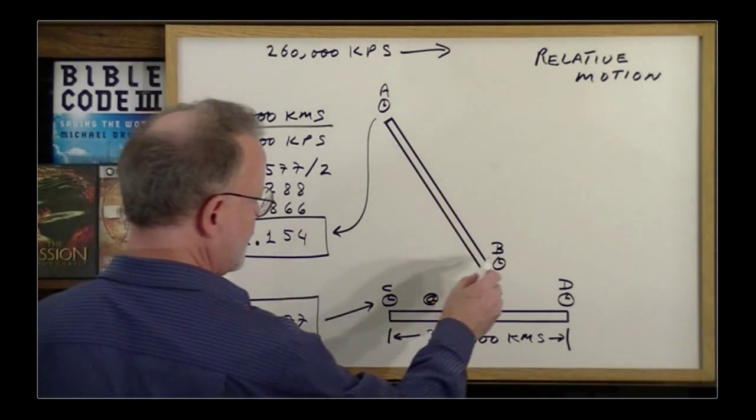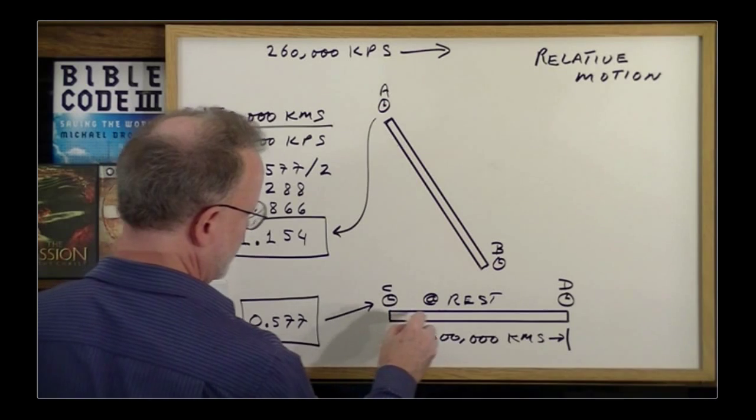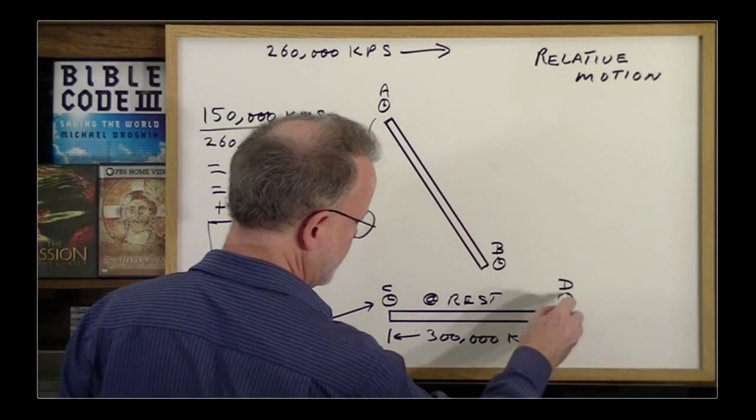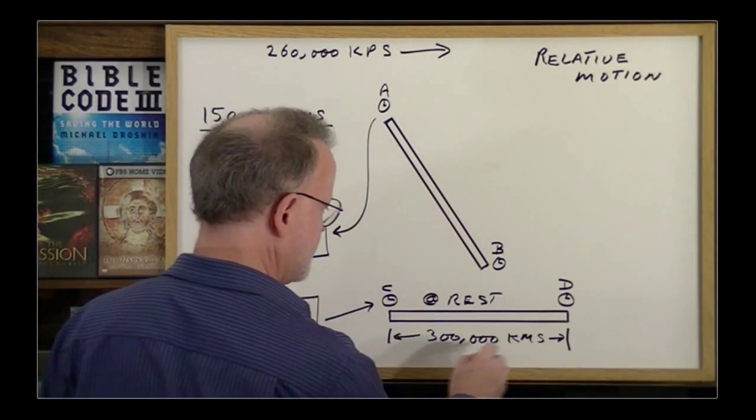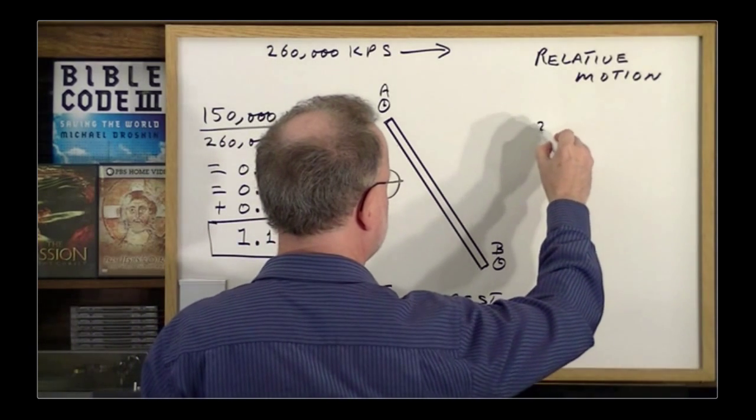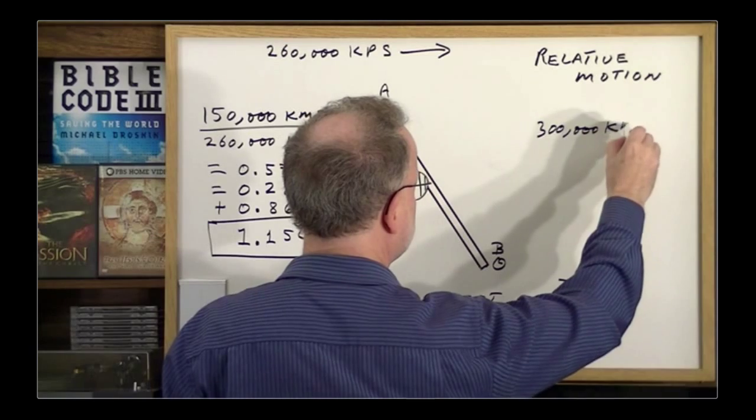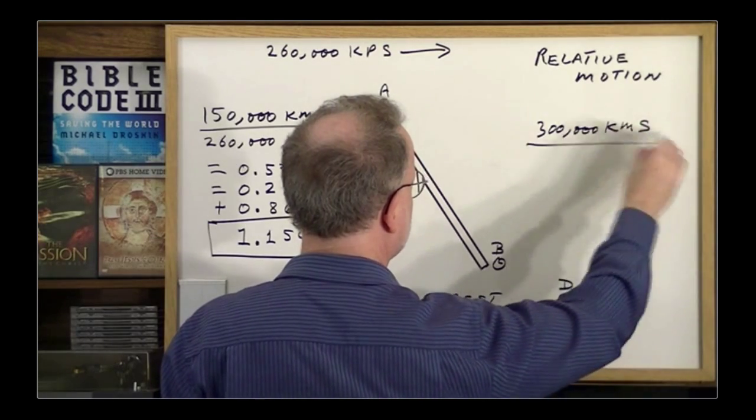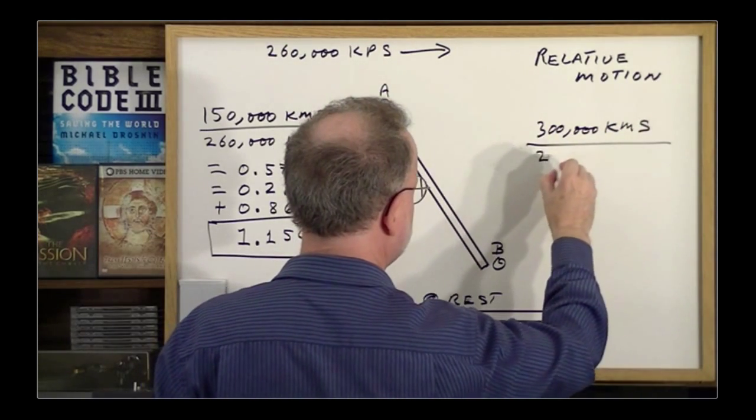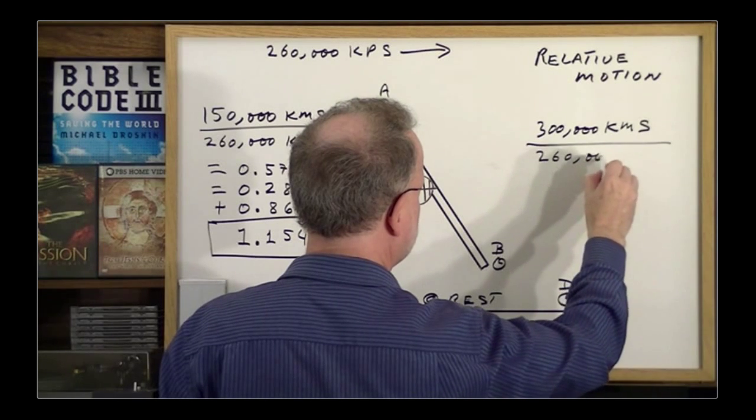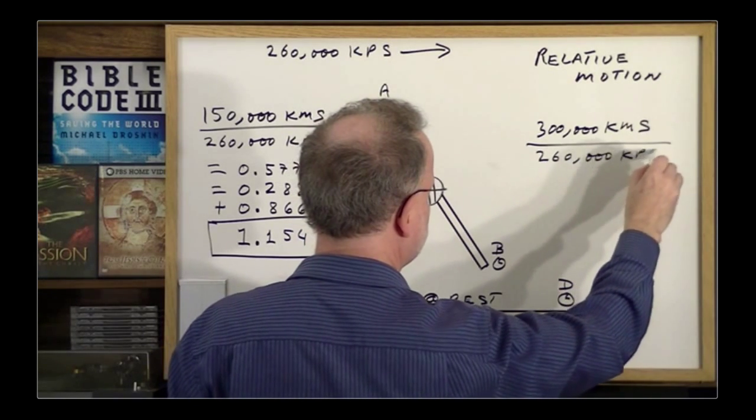Next, B started here at this end, but then eventually reaches the opposite end, lining up at D. Therefore, he's covered a complete distance of 300,000 kilometers and did so at a speed of 260,000 kilometers per second.